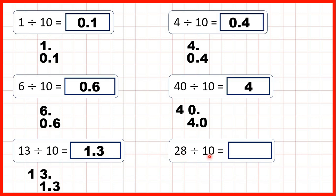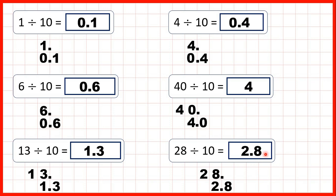For 28 divided by 10, we write out 28 with a decimal point at the end and copy down the decimal point. We're dividing so the digits move to the right, and if we're dividing by 10, the digits are going to move one square. So we copy down this 8 one square to the right, do the same with this 2, and we have our answer: 2.8.